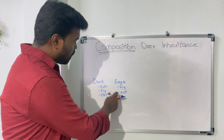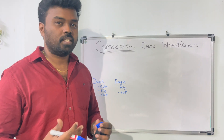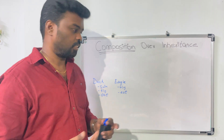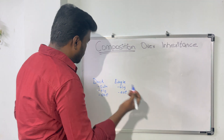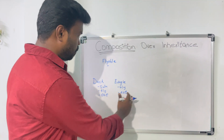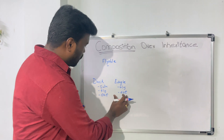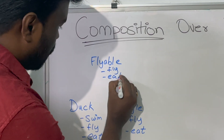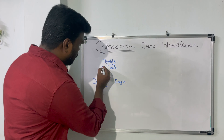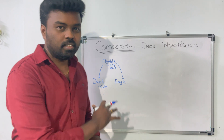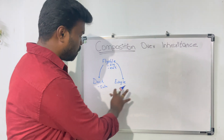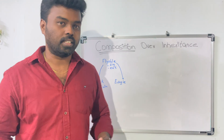Now the thing to notice is there are some functionalities which are common across duck and eagle. The functions fly and eat are common across duck and eagle, but we don't have to duplicate these functionalities in both classes. So we want to achieve code reusability. What people prefer here is inheritance. We can create a base class called flyable and define all the functionalities common across these two objects — fly and eat. We remove these functions from the objects and extend both duck and eagle from flyable. By doing this, we inherit the functionalities fly and eat from the flyable object, so we achieve code reusability.